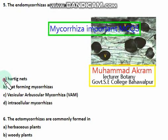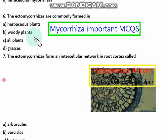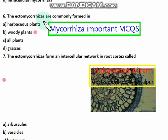The ectomycorrhizae are commonly found in herbaceous plants, woody plants, all plants, or grasses. The right option is option B — woody plants. The ectomycorrhizae are commonly formed in woody plants.